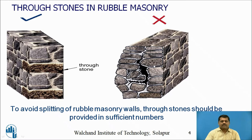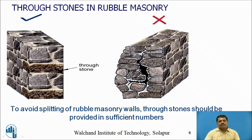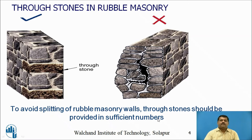The remedial measure for this is to provide through stones. A through stone acts as a complete integral element covering both faces, and the load above is distributed through it to the elements below. Through stones must be provided in both horizontal and vertical directions at sufficient intervals. After every one meter, through stones must be provided in horizontal or vertical direction to avoid splitting of the masonry wall.